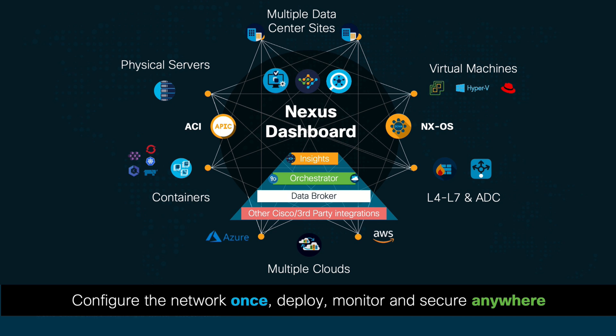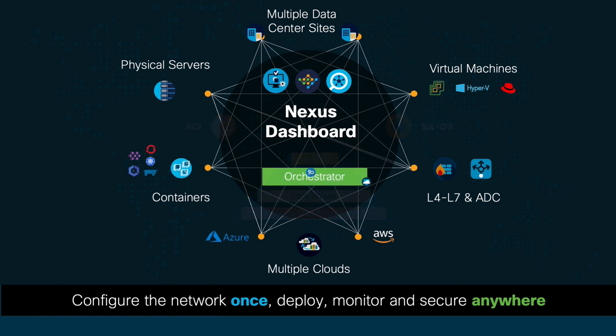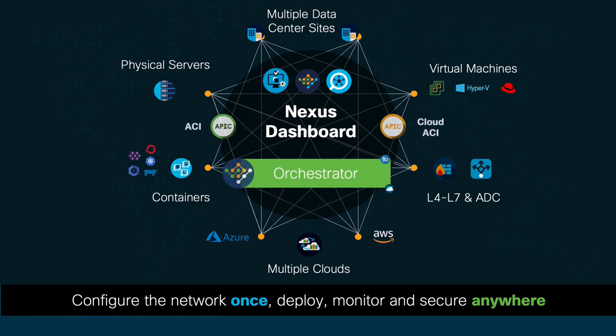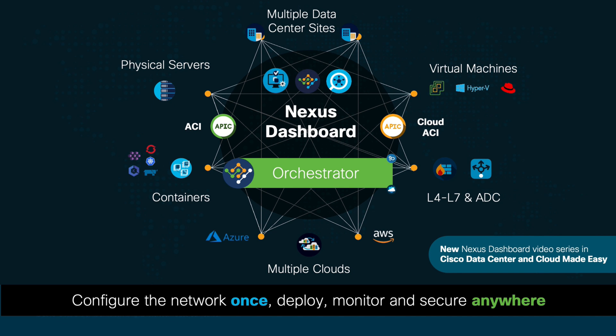Our objective for today's chapter is to get an overview of how multiple ACI sites can be connected automatically. Therefore, we will focus on the Nexus Dashboard Orchestrator service. However, if you're interested in learning more about other services, I will be posting a new series of videos focusing on the Nexus Dashboard, so stay tuned.